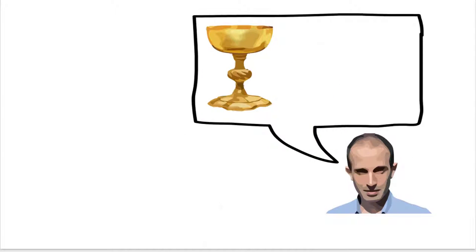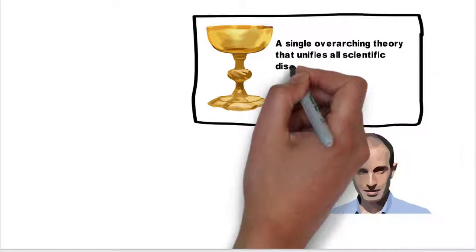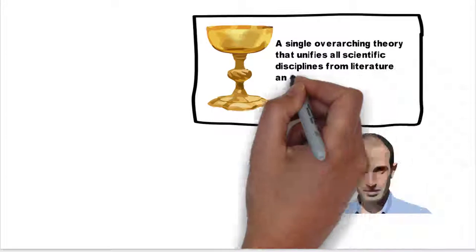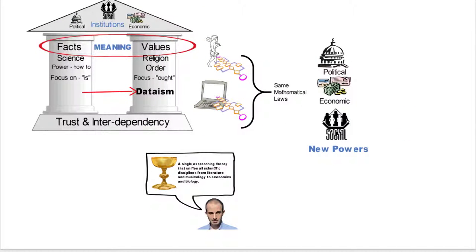Harari says it also provides us with kind of the holy grail, right? We have a single overreaching theory that unifies all scientific disciplines from literature and musicology to economics and biology.